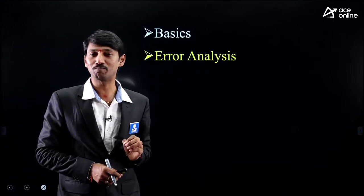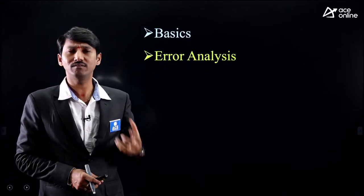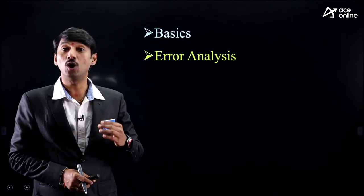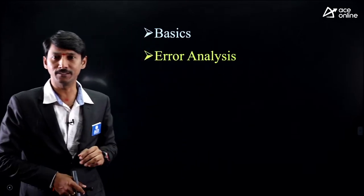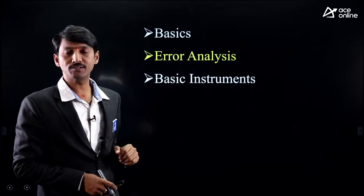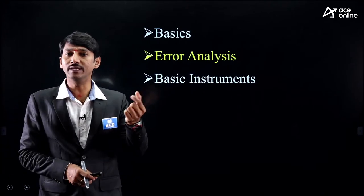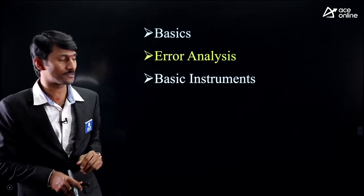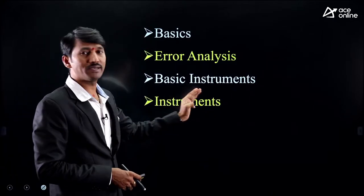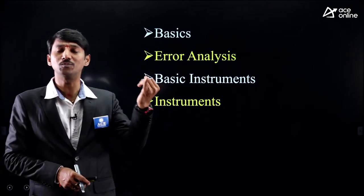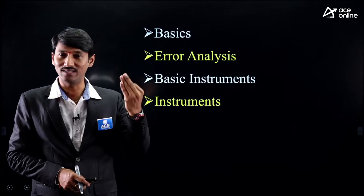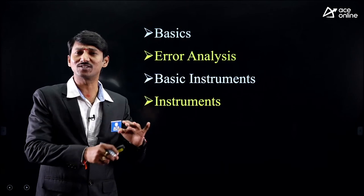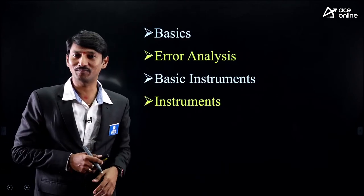In the error analysis chapter, we study: what do you mean by error, what is the reason for error, how do we minimize the error. Next is basic instruments — what do you mean by instrument, what are the constructional parameters of an instrument. Then the instruments chapter covers PMMC, MI, EMMC, electrostatic instruments, and their corresponding construction, operation, and formulas.